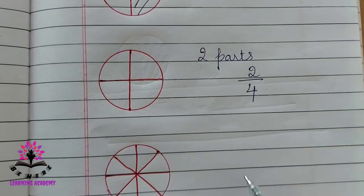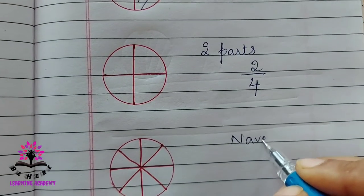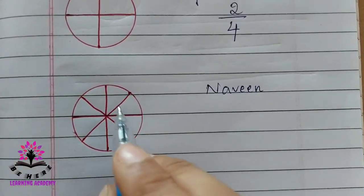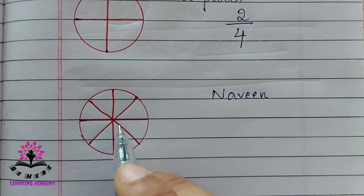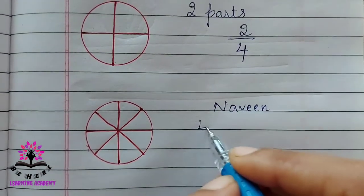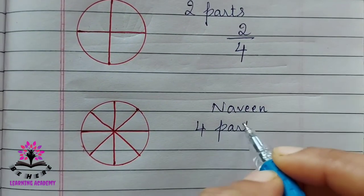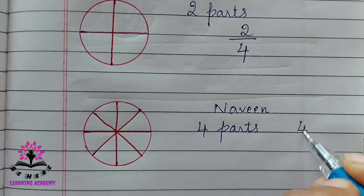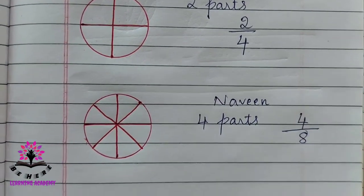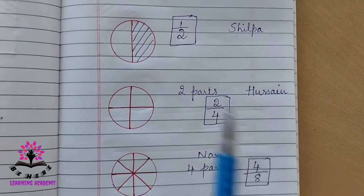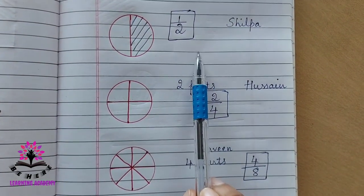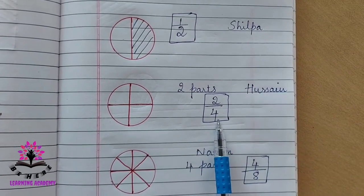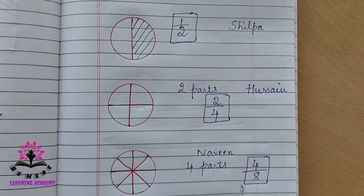Next one is Naveen. Naveen, out of eight equal parts he ate four parts, so we can say that he ate four by eight — 4/8. So Shilpa took 1/2, Hussain took 2/4, and Naveen took 4/8.